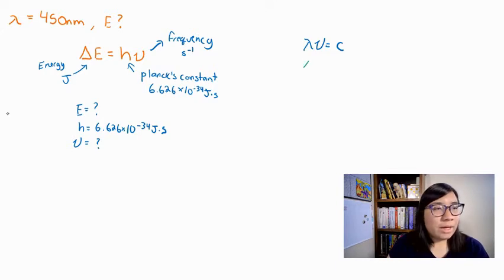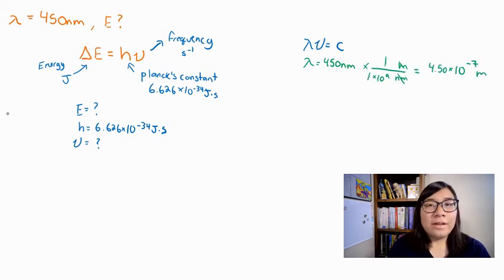I know that my lambda is 450 nanometers, and don't forget that this needs to be turned into meters. So I'm going to do that really quick. I found that my lambda is 4.5 times 10 to the negative 7 meters. And now I am ready to put it into my equation.